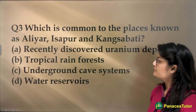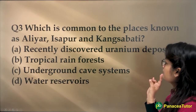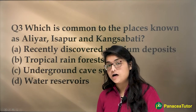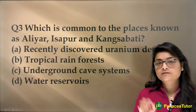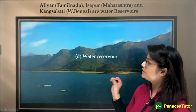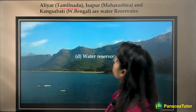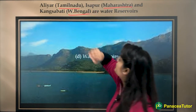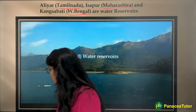The third question asks what is common to the places known as Aliyar, Isapur, and Kangsa Bati. These were recently in the news. The answer is that these are water reservoirs — Aliyar is located in Tamil Nadu, Isapur is in Maharashtra, and Kangsa Bati is in West Bengal. These are water reservoirs in different states.